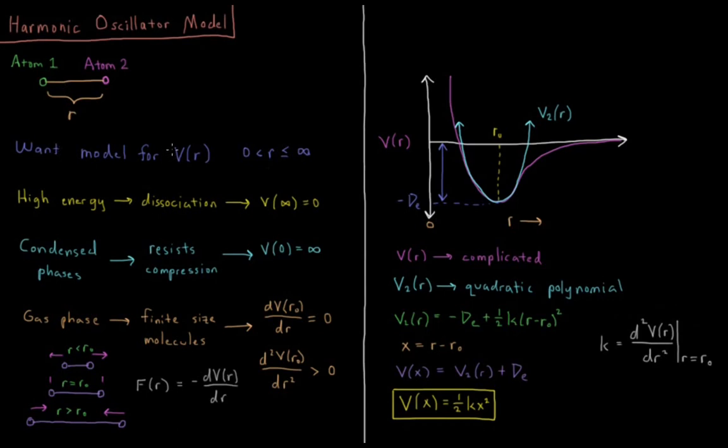So the natural coordinate for expressing this potential energy is r, the bond length, so we want to model for all possible bond lengths. What is the value of the bond length? It can be anything between 0 and infinity. So we want to specify what V(r) is everywhere between 0 and infinity.